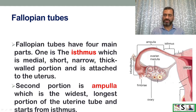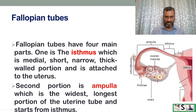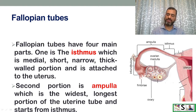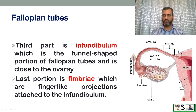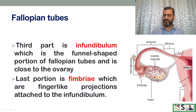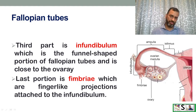The ampulla is the widest and longest portion of the uterine tube, extending from the isthmus to the infundibulum. The infundibulum is the funnel-shaped portion close to the ovary. The fimbriae are finger-like projections attached to the infundibulum, located very near the ovaries, and they receive the secondary oocyte after ovulation.